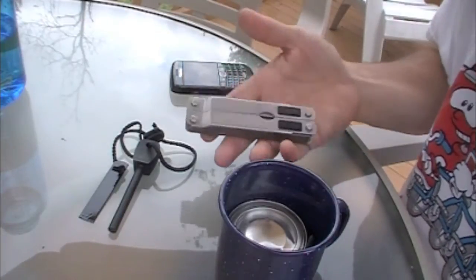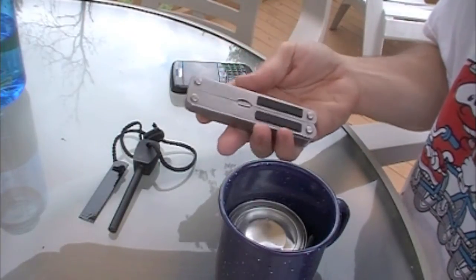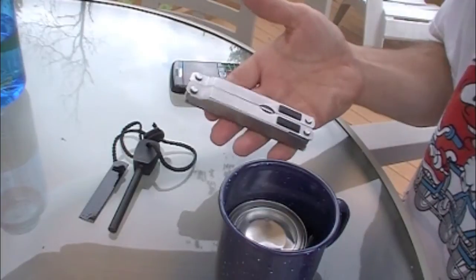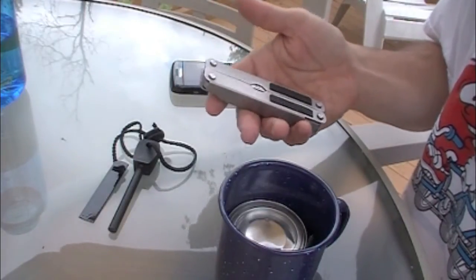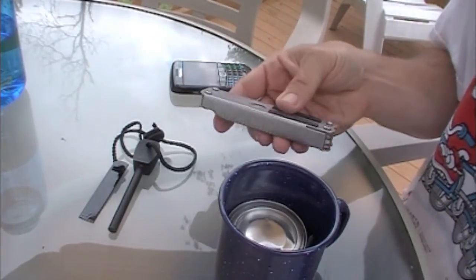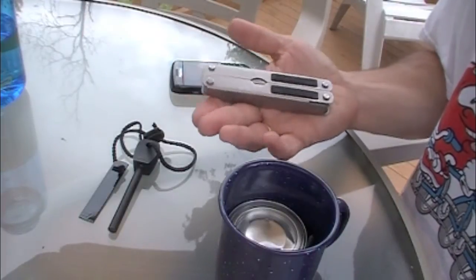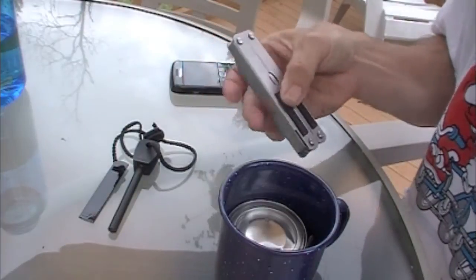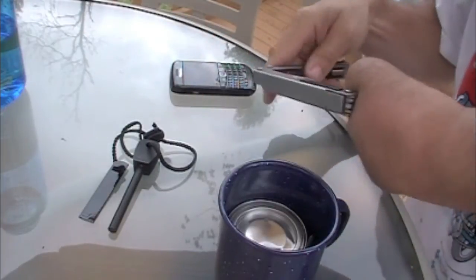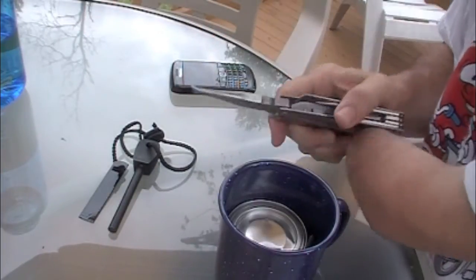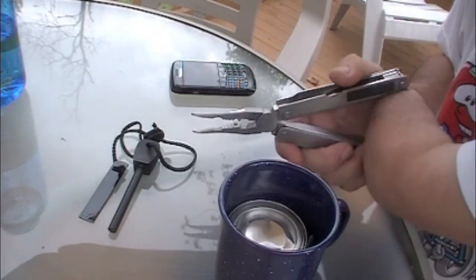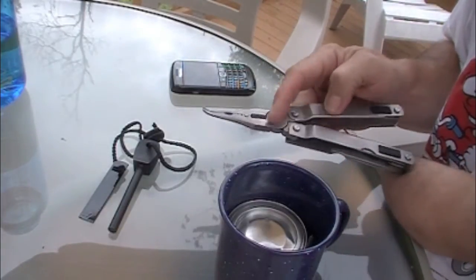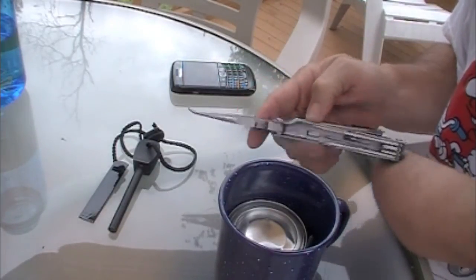So here we have a multi-tool. It's not a Leatherman. Leathermans are quite expensive. This one is Pro Pocket Fishing Pliers by Coast. I bought them at Walmart for $19.99. They come with needle nose pliers, cutter, crimpers, that sort of thing.